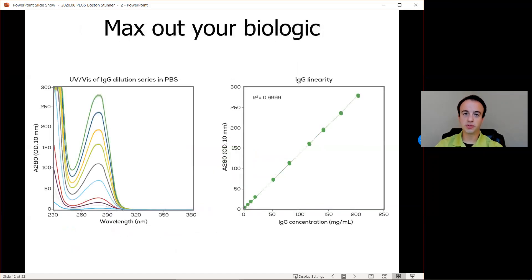But for an even more real world example, we have a dilution series of IgG in PBS from 2 to 200 milligrams per milliliter. The UV absorbance range means that Stunner can detect all concentrations in this series without having to dilute at the upper end. The raw absorbance spectrum is shown on the left and the absorbance at 280 nanometers shown on the right shows linearity with an R-squared better than 0.9999.